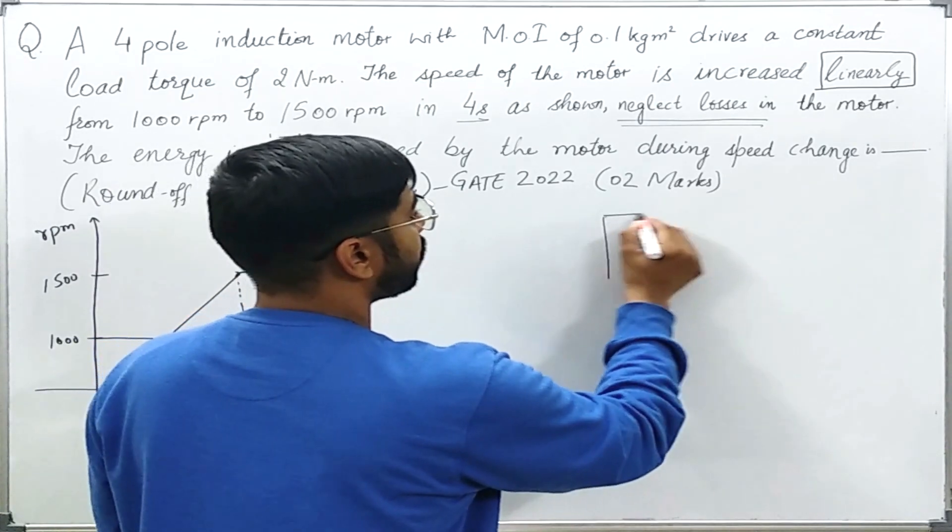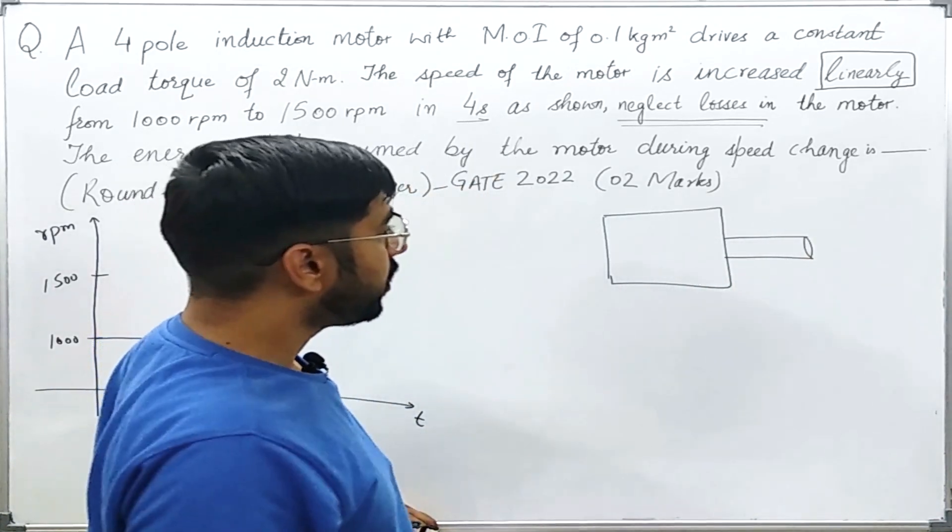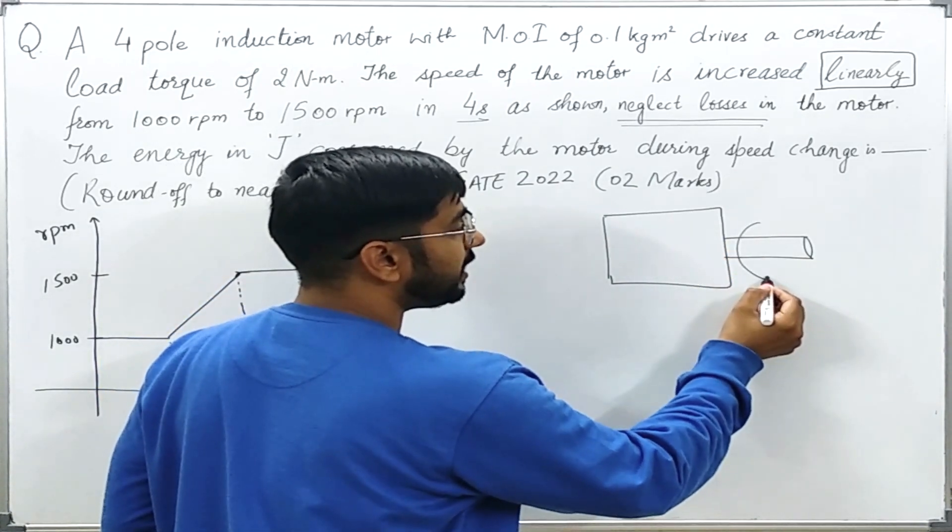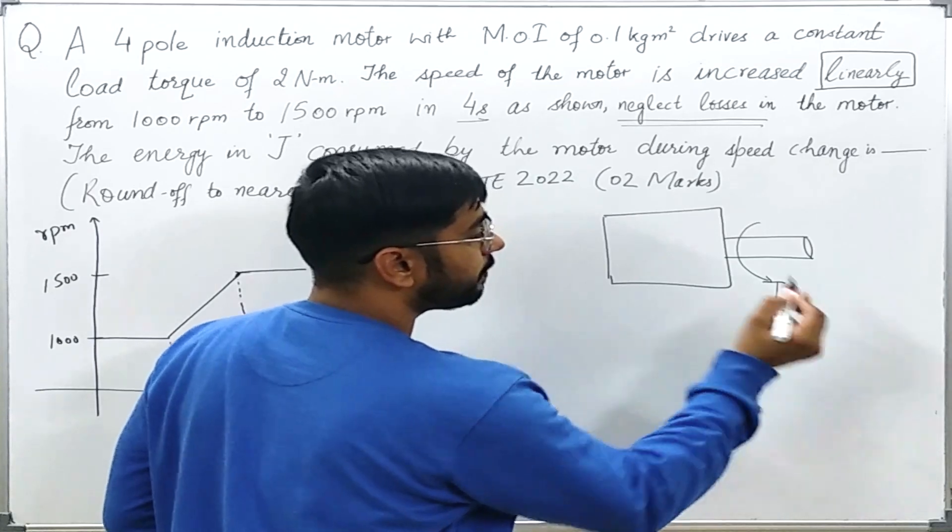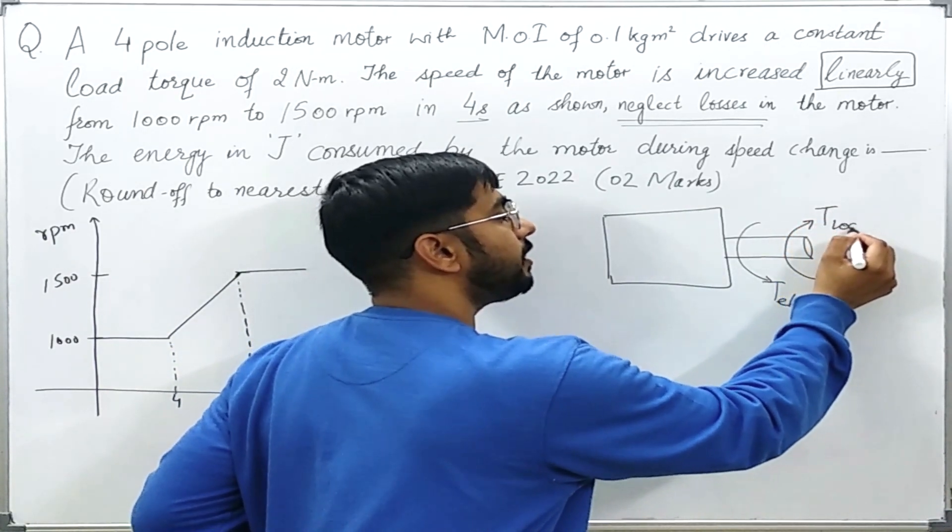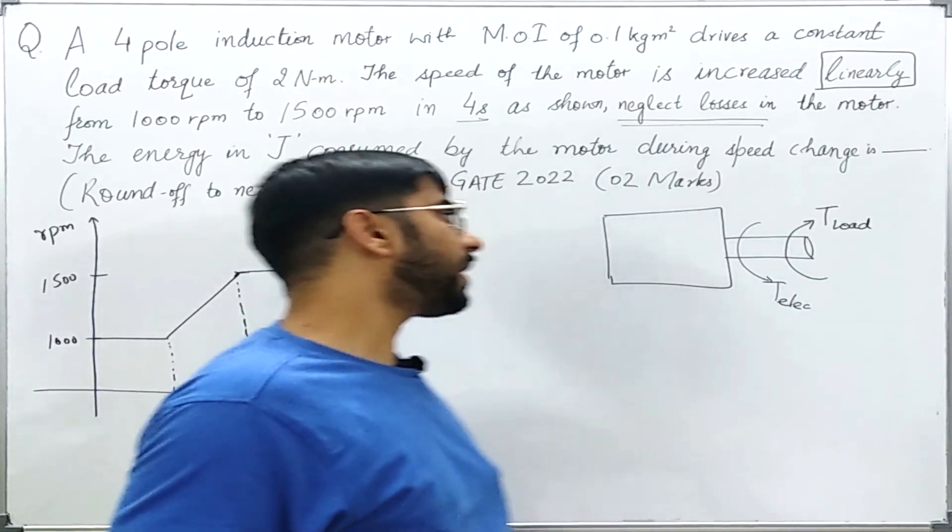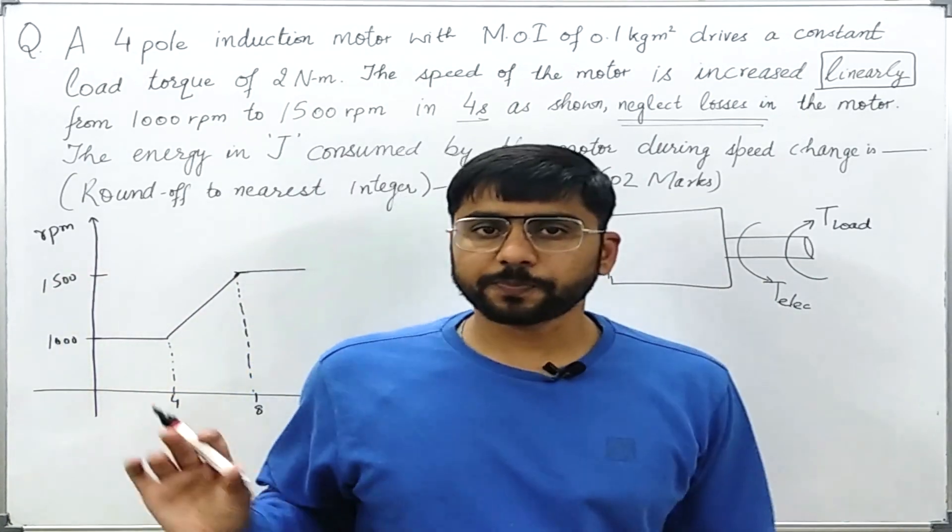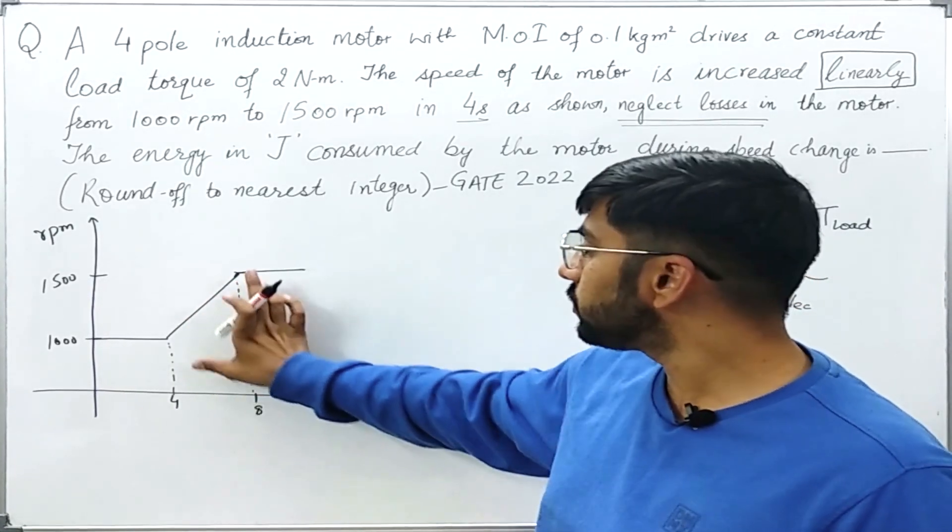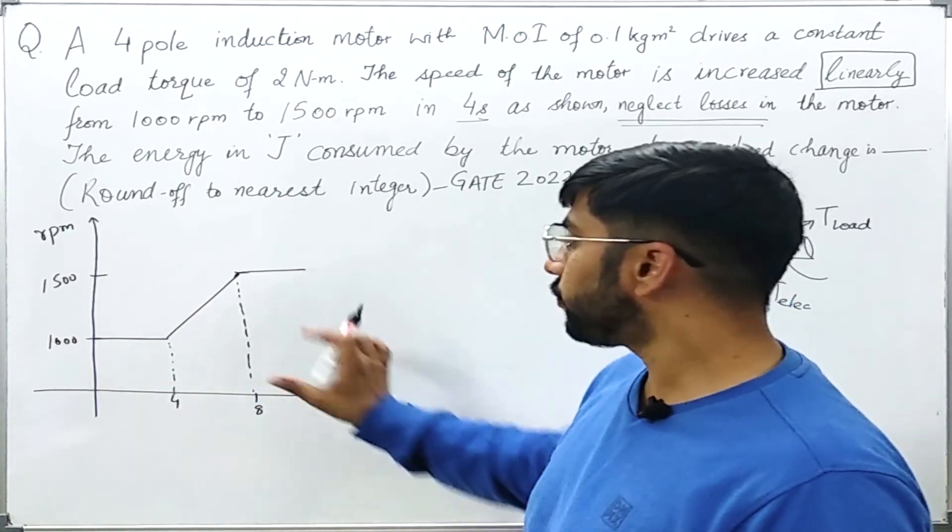So let us say this is the motor and this is its shaft. Now on this shaft two torques are being acted upon. First torque will be the torque due to the electrical origin. And the other torque will be because of the load. And it is clearly known to everybody that the load torque will be opposing the torque developed due to the electrical nature. Now during the duration of speed change, as we can see that the speed change is linear, so we can clearly see that the angular acceleration will be constant because this change is linear. So angular acceleration will be a constant thing. So this thing makes our calculation very easy.